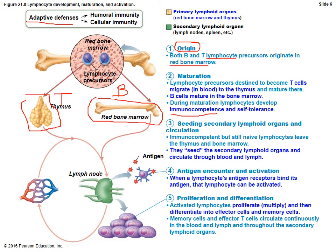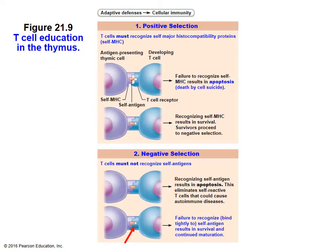Once immunocompetency training is complete, T and B cells go to our secondary lymphatic organs and do what we call seeding — they find a place to stay and wait to become activated. Activation means a foreign antigen is presented to them. When activated, there is a proliferation and differentiation step: proliferation multiplies the T and B cells, and differentiation tailors them to attack that specific antigen. This produces effector cells — antibodies that tag the foreign antigen or T cells that kill it — as well as memory cells to record that particular attack for faster responses upon future exposure.